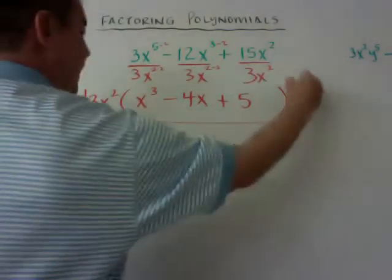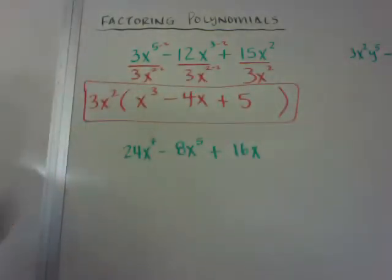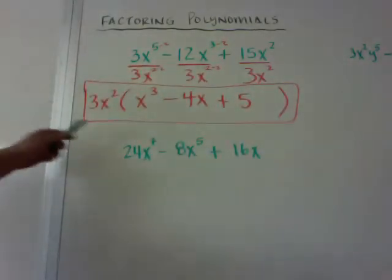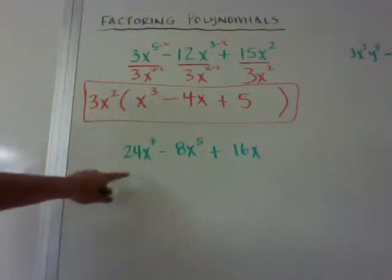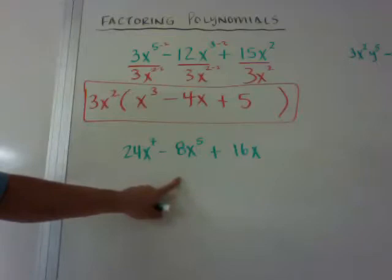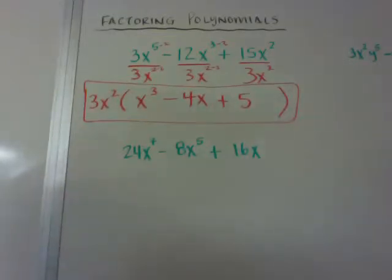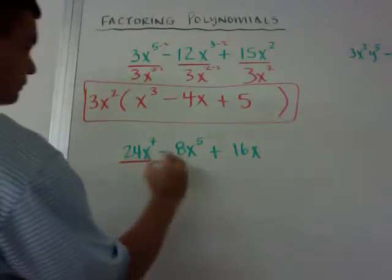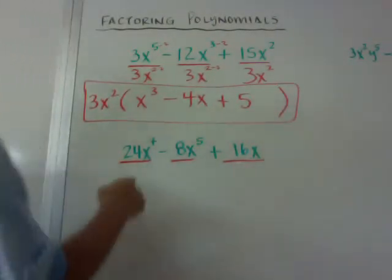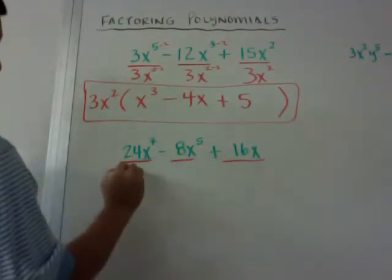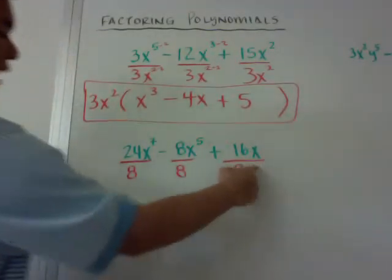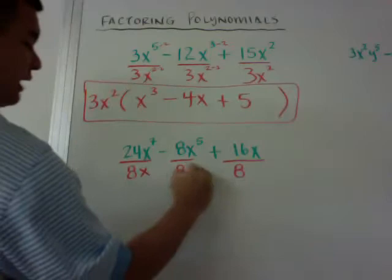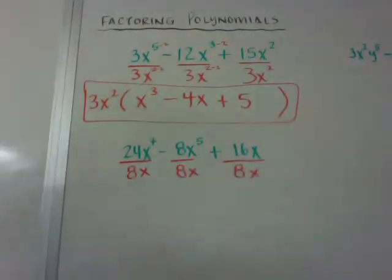So what you did was you just factored out the 3x² and then left whatever was left. So here's another example in case you didn't get that. I have 24x⁷ minus 8x⁵ plus 16x. I want to put each one of these over to make a fraction. I can see the GCF for this is going to be 8. And then I have 1x, 5x, and 7. So all I can pull out is the 8x.